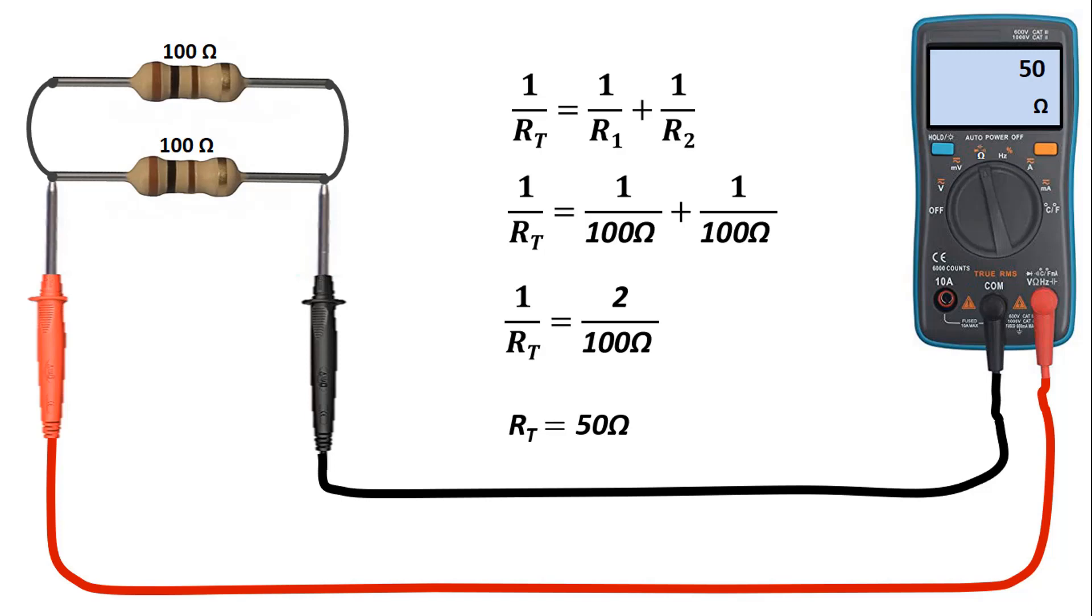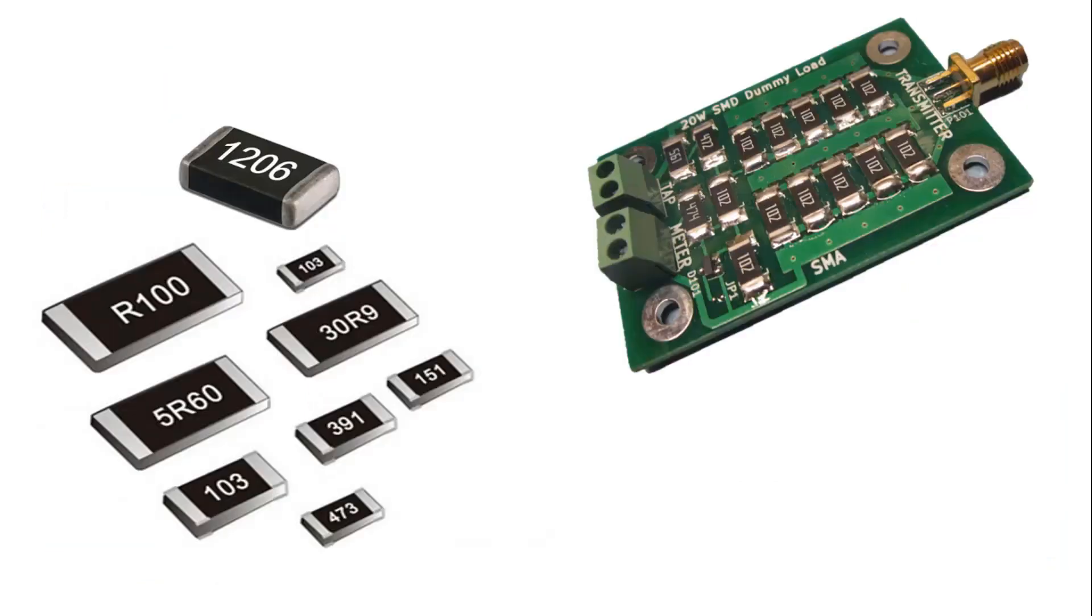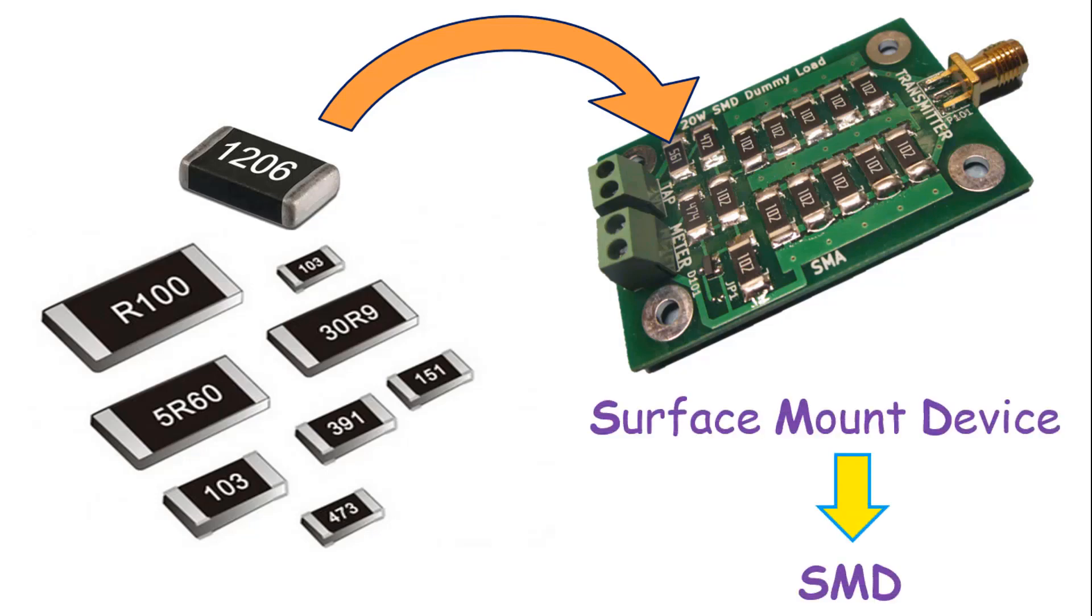Nowadays, electronic cards have become smaller and correspondingly, the circuit elements used on these cards are now reduced to much smaller size. Therefore, the resistors used on these cards are used as surface mounting devices as shown. These resistors can be used in this way by connecting directly to the circuit board.